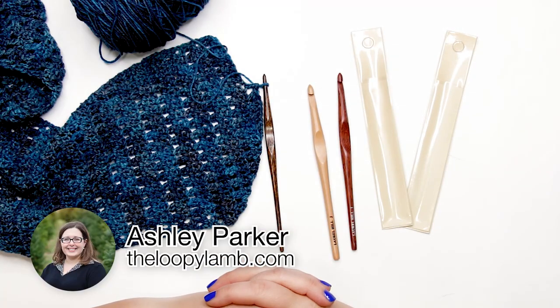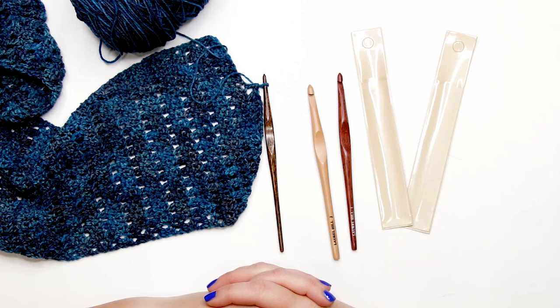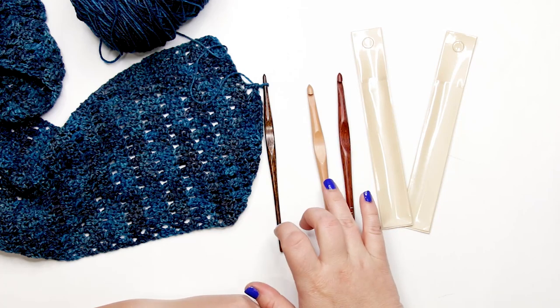Hello there friends, it's Ashley here from The Loopy Lamb and loopylam.com. Thanks so much for stopping by the channel. Today we're going to be taking a look at three different Laurel Hill crochet hooks: the Nam Ock, the Tri, and the Forest Palm.